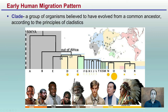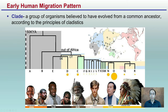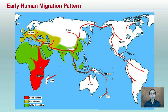Within the early human migration pattern, there's a clade — a group of organisms believed to have evolved from a common ancestor according to the principles of cladistics — meaning all individuals here can be traced back to one common ancestor. Looking at the early human migration pattern, you can see the Out of Africa model, where the oldest components date to about 200,000 years ago, shown in red, with arrows pointing to the potential migration of those individuals.